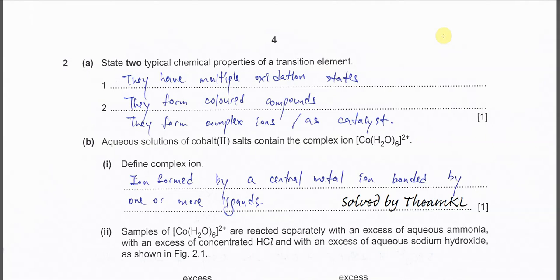Question 2A, state two typical chemical properties of transition elements. Okay, so we know that transition elements can form multiple oxidation states, for example iron 2,